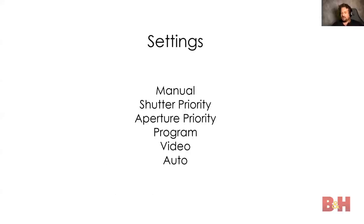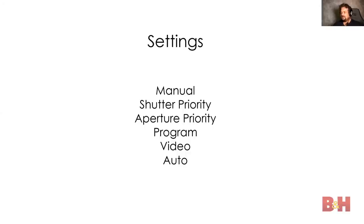Some of the settings on your dial include manual, shutter priority, aperture priority, program, video, and auto. Depending on the camera model you have, you may have more or less options. The terminology may vary slightly if you're not shooting with Sony, but the broad strokes of what I'm talking about should apply to any camera — we still like you.